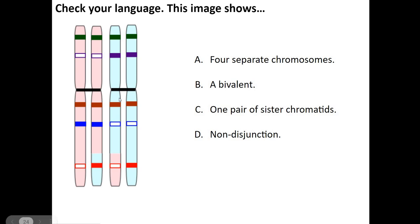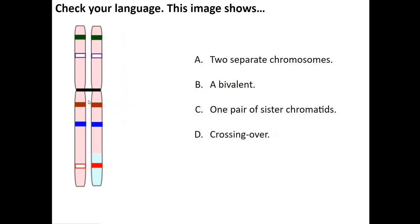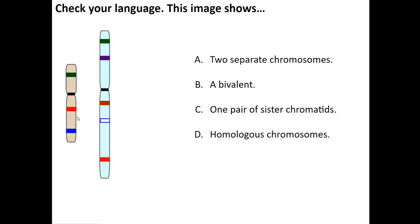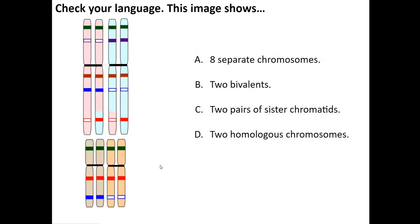Let's do a quick check of our language. What do we have here? This shows how many chromosomes — looks like two chromosomes, but actually it's a bivalent. And this one — one pair of sister chromatids, no crossover event visible. Then two separate chromosomes — not a bivalent. And finally, four chromosomes — two bivalents.